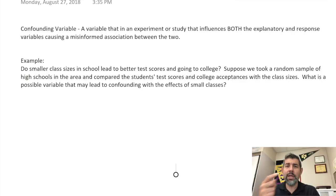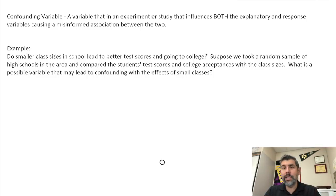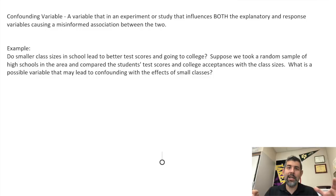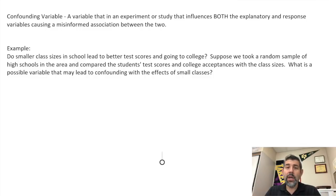A confounding variable causes some misinterpretation or misinformed association between those two variables. Here's the example: there's a lot of research on whether small class sizes actually help test scores in high school. What we're going to do is take a random sample of local high schools. This isn't really a controlled experiment — we're not actually reducing class sizes. We're just going to do a retrospective study, randomly select some high schools in the area, and compare students' test scores and college acceptances with the class sizes of that high school.